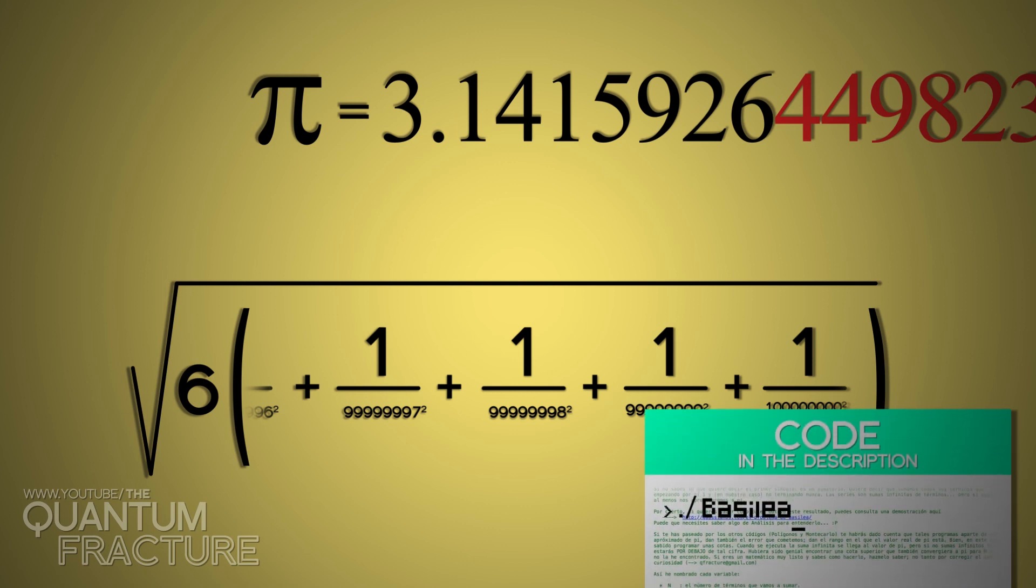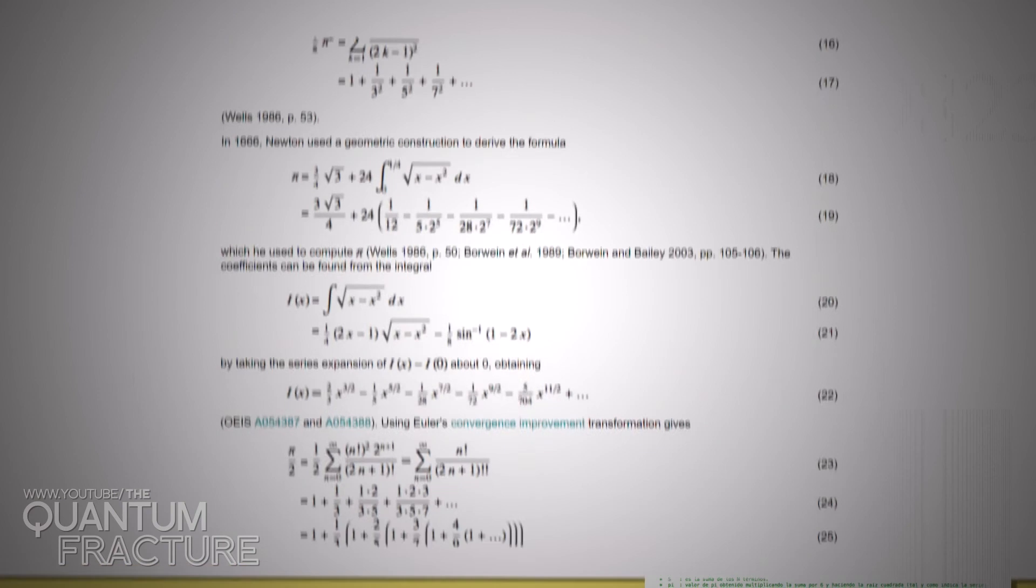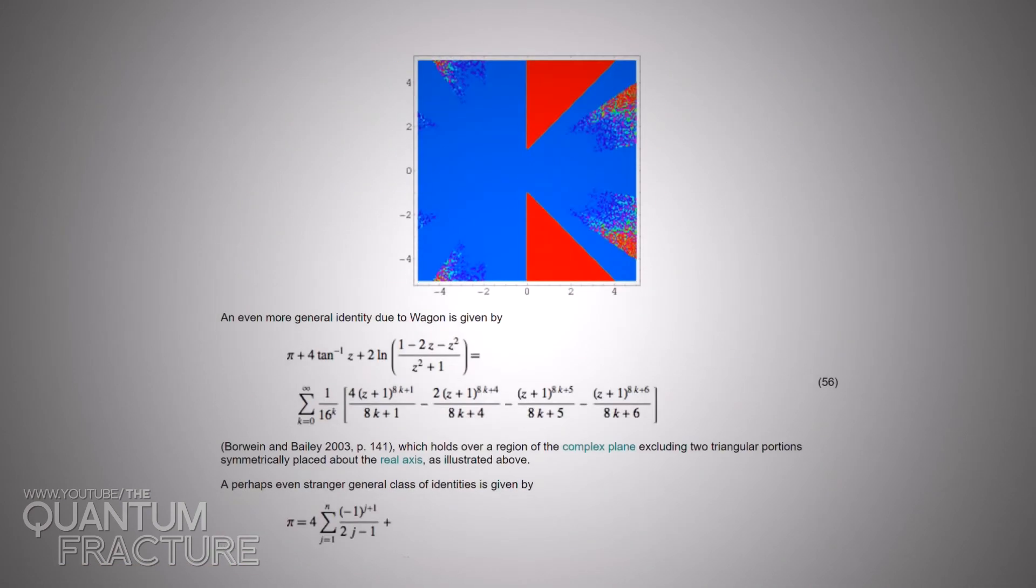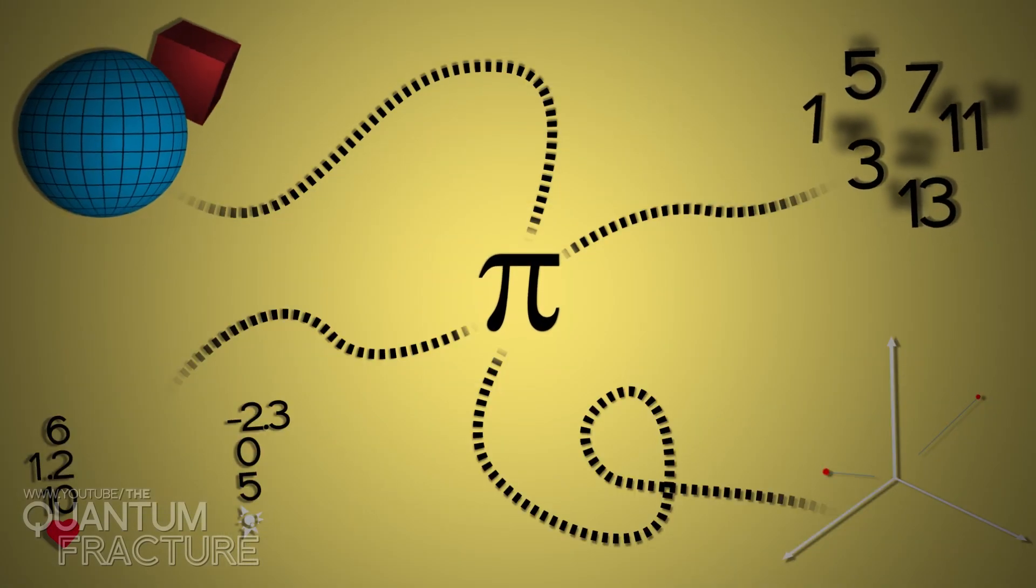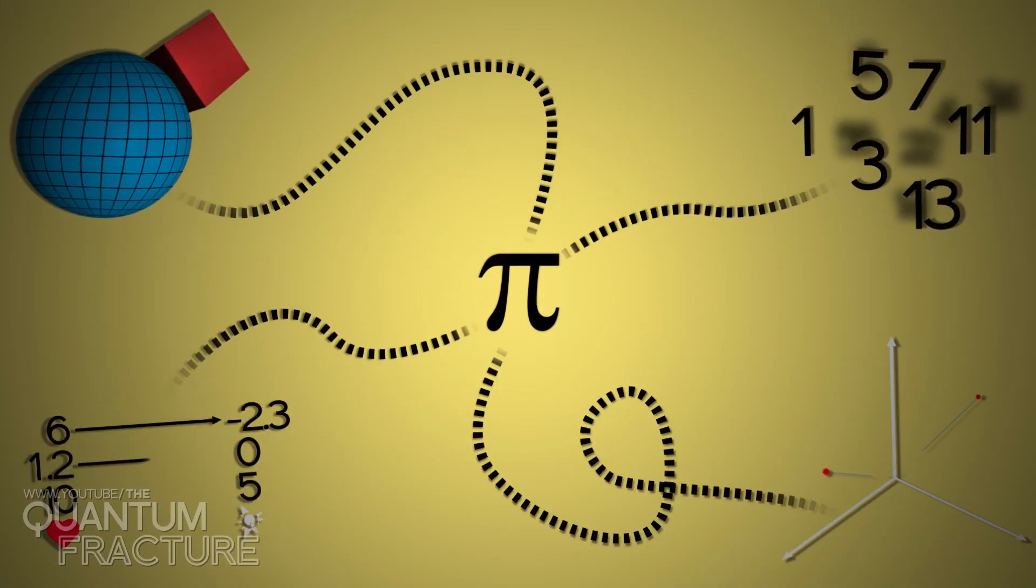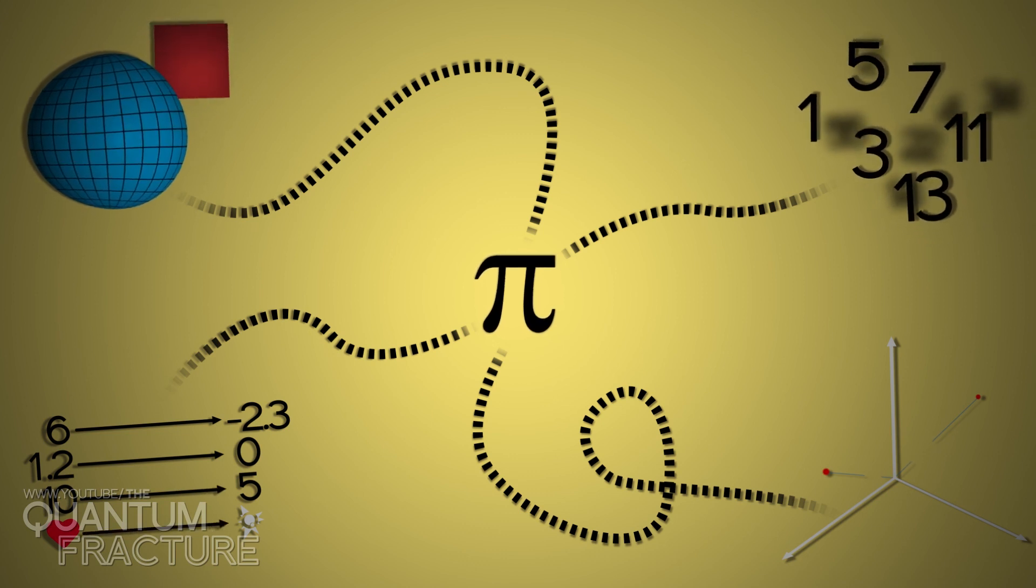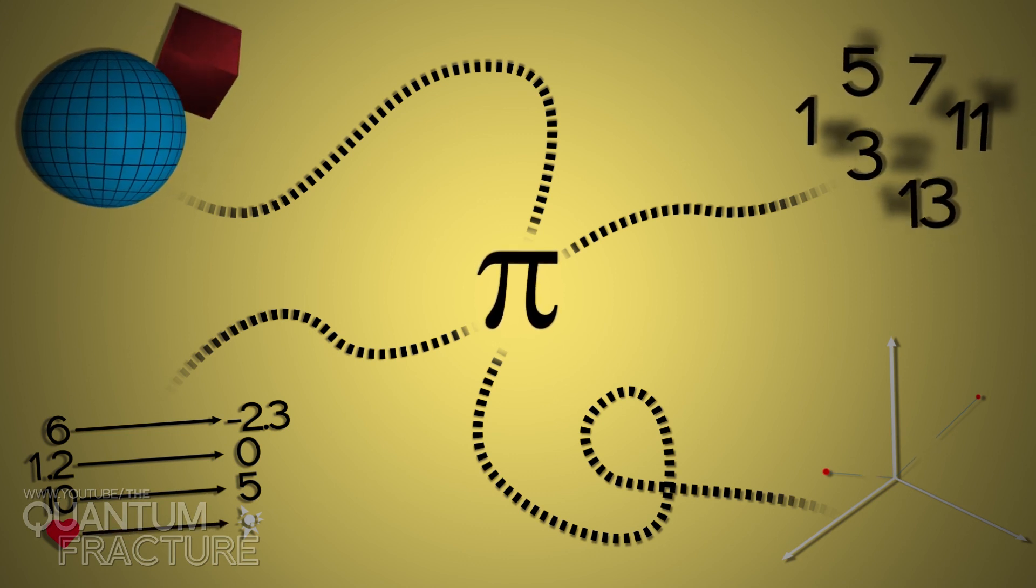I want to underline that this is not the only series leading to pi. There are lots of formulae in the mathematical world, some even more efficient than this one, that connect with this number. Connections from lots of corners of mathematics, not only geometry. And this is one of the oddest things about pi. It appears naturally without circles or circumferences around.